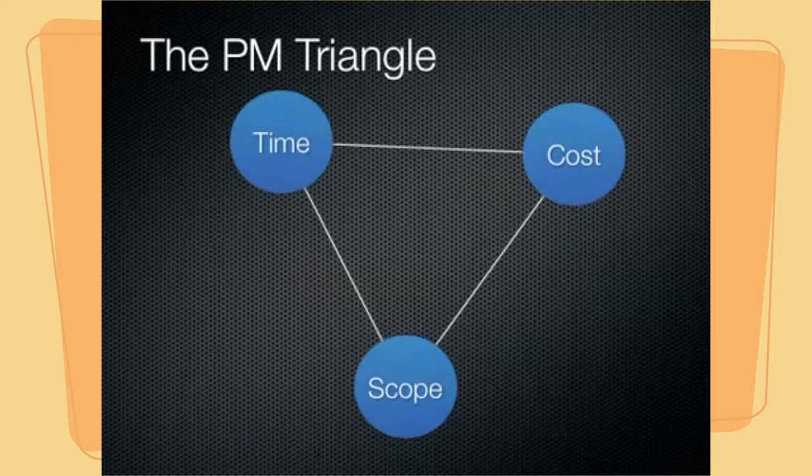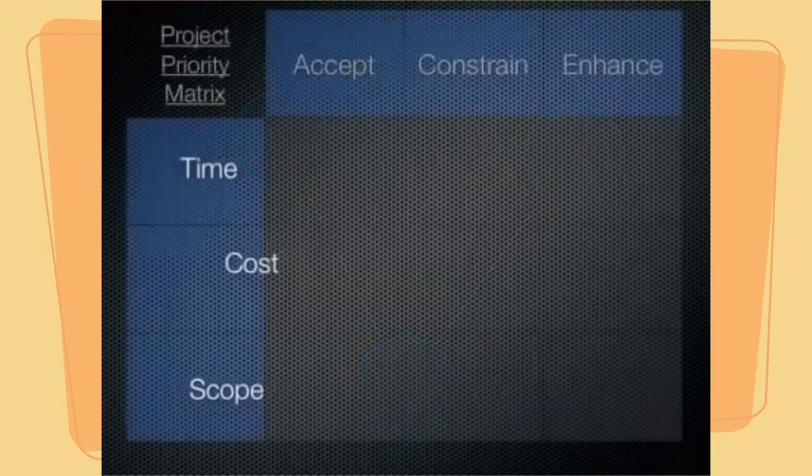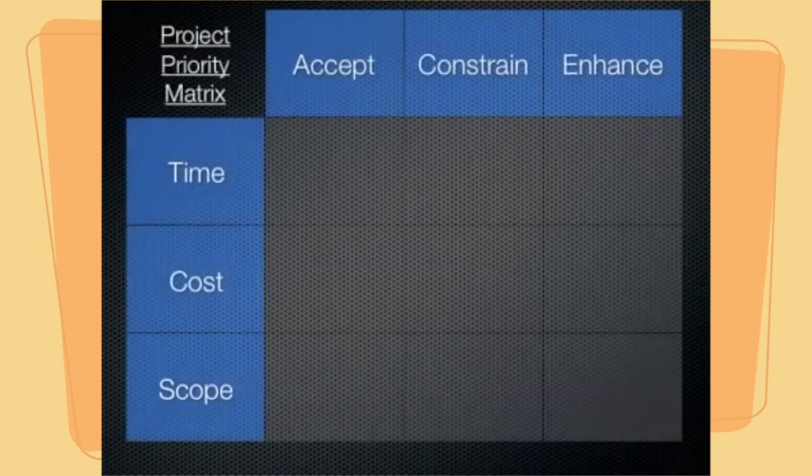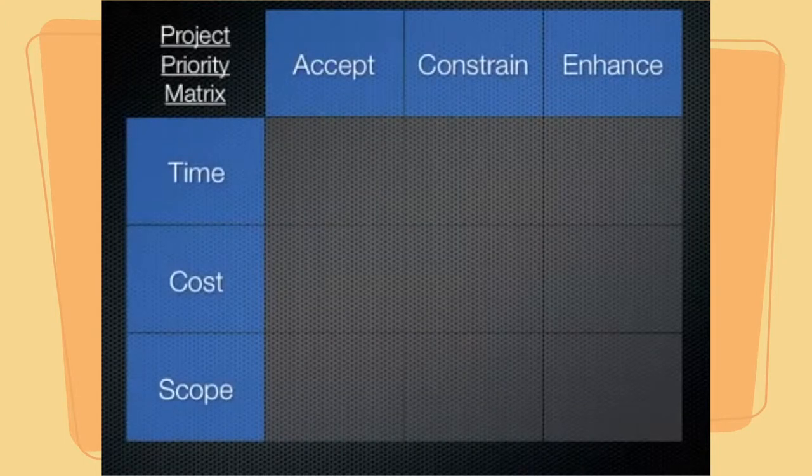We can make this understanding very clear using a tool called a Project Priority Matrix. In this matrix, we consider these three elements of the project and three ways that we can balance these elements against each other.